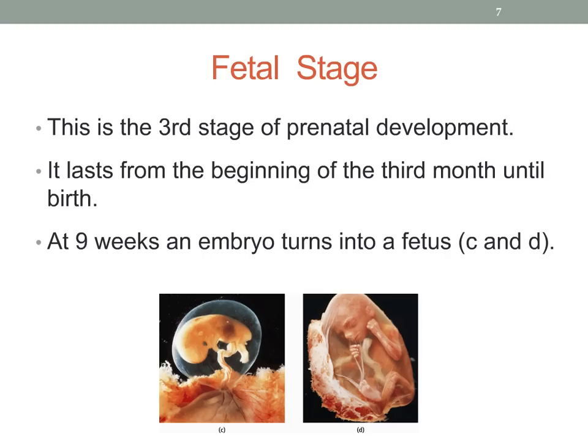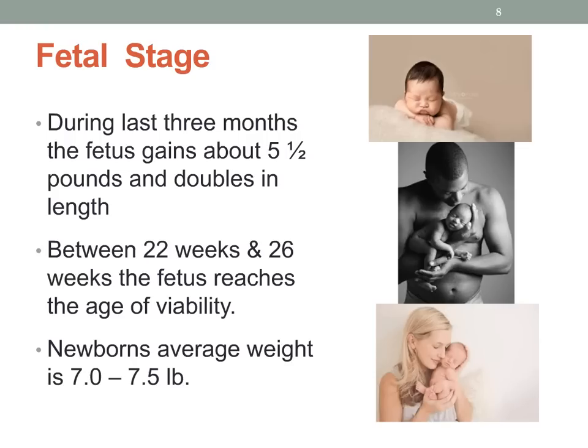The third stage is called the fetal stage. It lasts from the beginning of the third month until birth. At nine weeks, we begin calling the developing organism no longer an embryo but a fetus. You can see the difference in developmental progression in the photos — C shows the embryo and D shows the fetus.